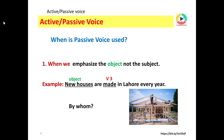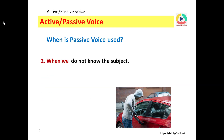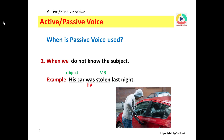Number two: we use passive voice when we do not know the subject. Example: his car was stolen. Car is the object, was is the helping verb, stolen is the third form of the verb. By whom? His car was stolen — we do not know who stole the car at all.